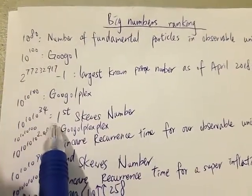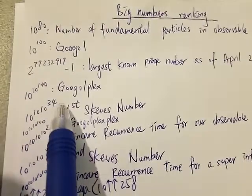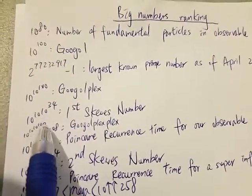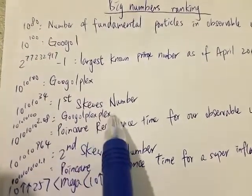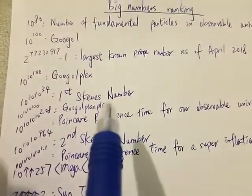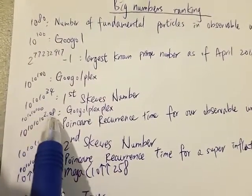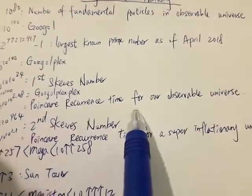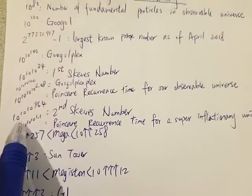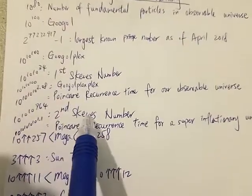Next we have the first Skewes number, which is 10 to the 10 to the 10 to the 34. Then we have 10 to the 10 to the 10 to the 100, and after that, 10 to the 10 to the 10 to the 964, which is the second Skewes number.